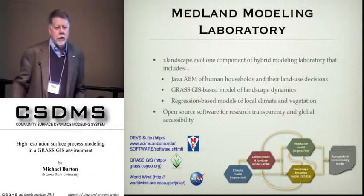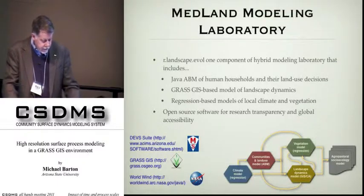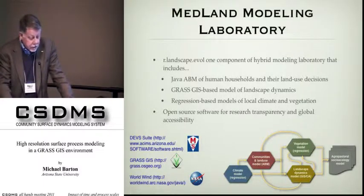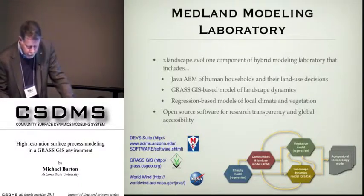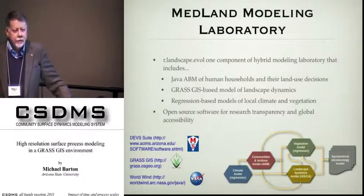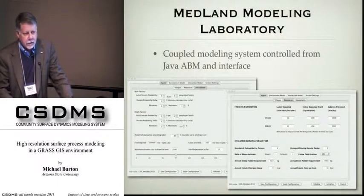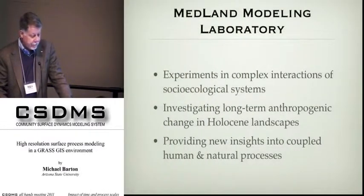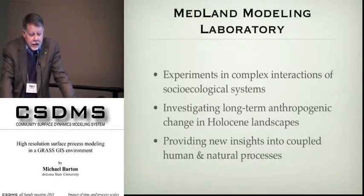This script, called RLandscapeEvol for landscape evolution, is one component of this hybrid modeling laboratory, which includes a Java-based agent-based model of human households and land use decisions, along with GRASS GIS-based modules for landscape dynamics, and regression-based models for climate and vegetation. We're using open source software for research transparency and global accessibility. This kind of coupled modeling system, controlled from the Java-based GUI where you can put in information on land use, allows us to carry out experiments in the complex interactions of socio-ecological systems and look at long-term anthropogenic change in Holocene landscapes.